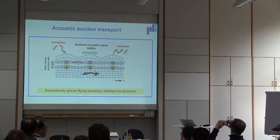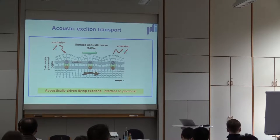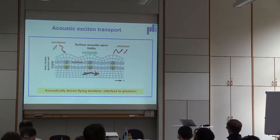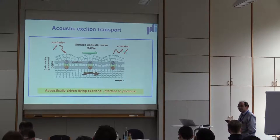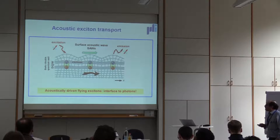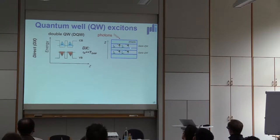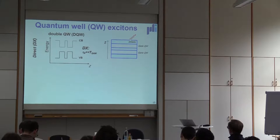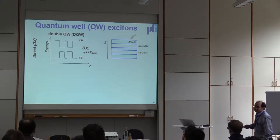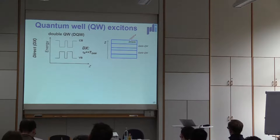A problem with excitons, contrary to electrons, is that they are metastable particles — you generate them but the electron can recombine with the hole, normally in a very short time, which is typically smaller than the period of the acoustic wave. One way to get around this is to use a double quantum well system: two quantum wells coupled by a thin tunneling barrier. If we excite excitons in these quantum wells, we can use an electric field to control the overlap between the electron and hole wave functions, controlling the recombination lifetime. These are called indirect excitons, or dipolar excitons.